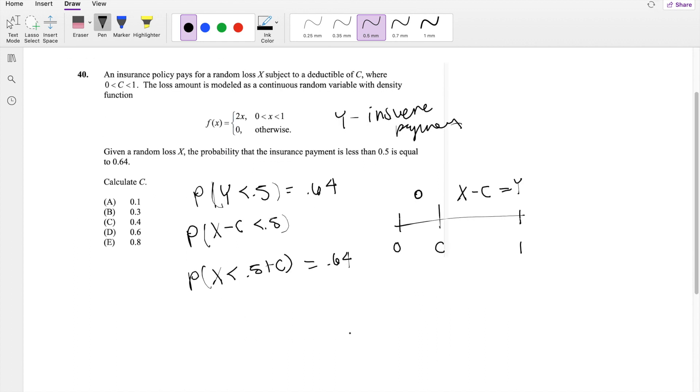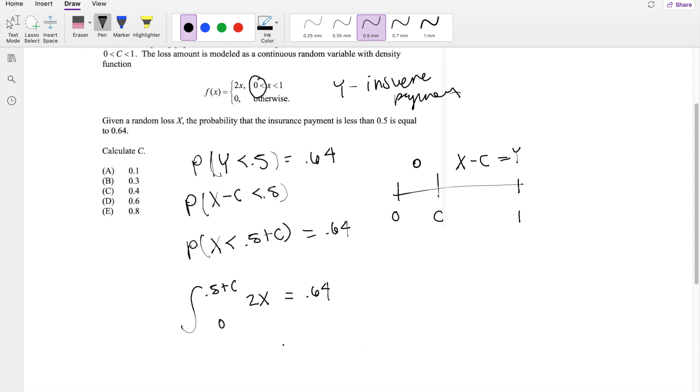Now this just becomes a really easy continuous integral. x is less than 0.5 plus C, the lower limit here is gonna be 0 of this function right here, and this is equal to 0.64. And that's what they're telling you, and now we just solve this sucker out.